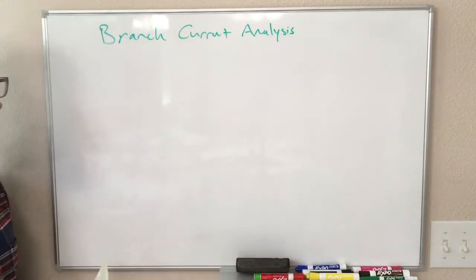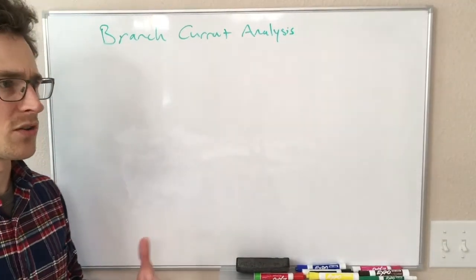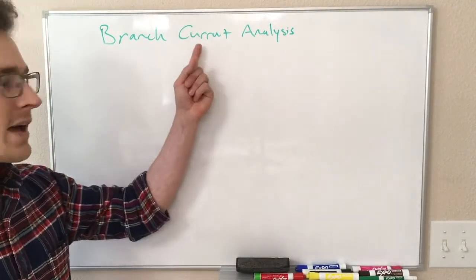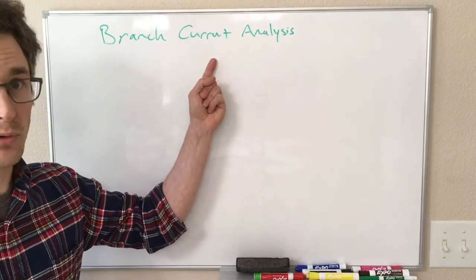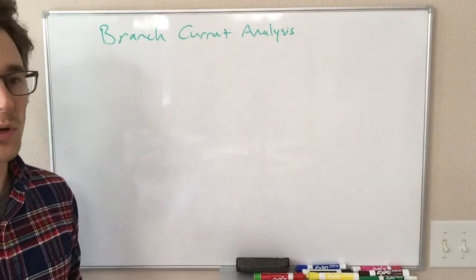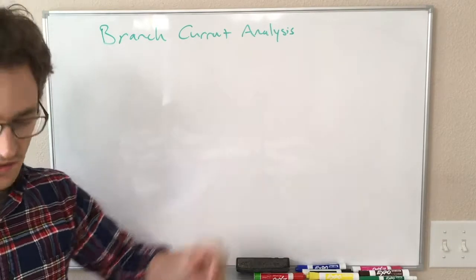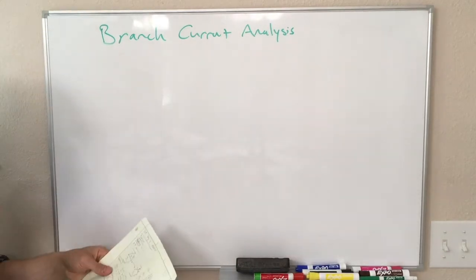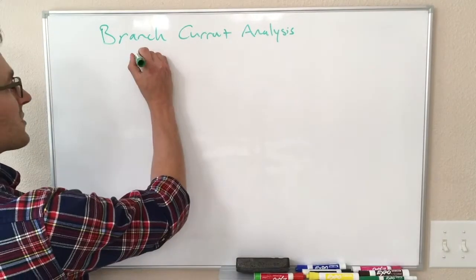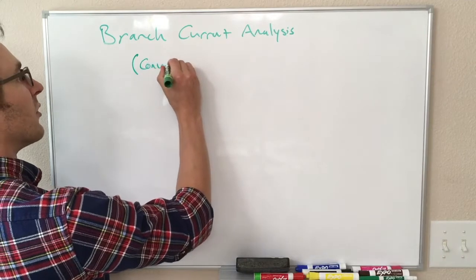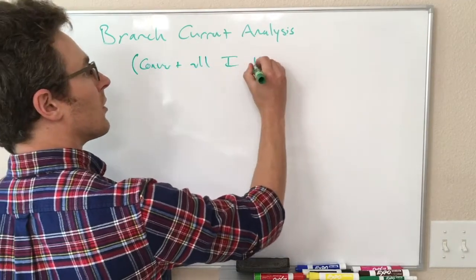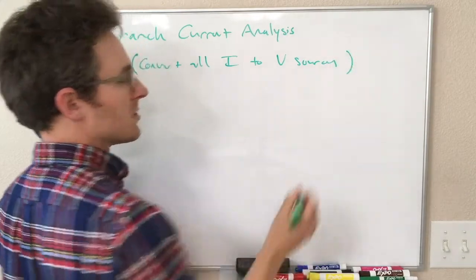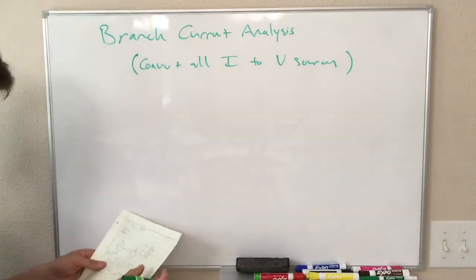Branch current analysis. The idea here is that we split our circuit into several different branches, each of which has a current flowing through it that we define, and then we analysis. Okay. So the rules. First, like I just said, we have to convert all current to voltage sources because this is only going to work with voltage sources.